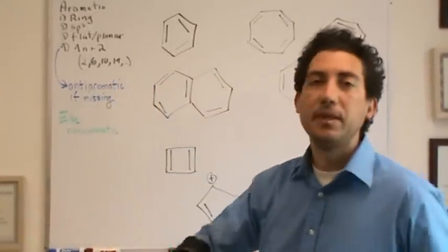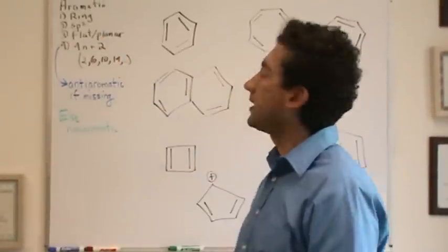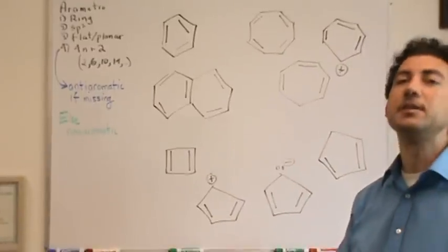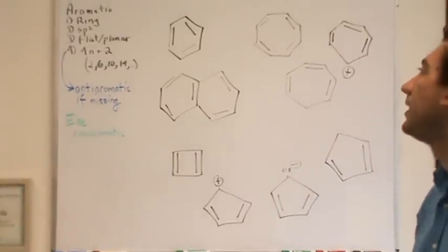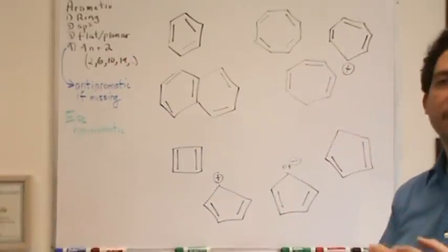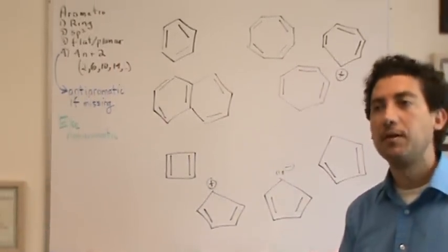If it's aromatic, basically you have a flat ring where everything is sp2 hybridized. Sp2 hybridization means it's flat, it's planar. And the fourth thing, really to make something aromatic, is it follows Huckel's Rule, which is 4n plus 2 pi.